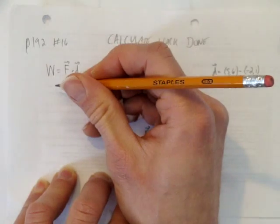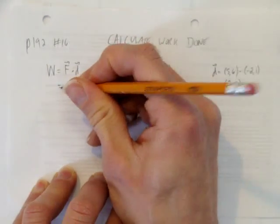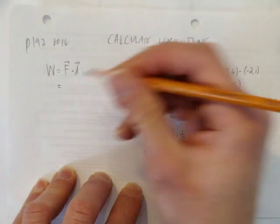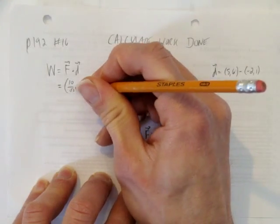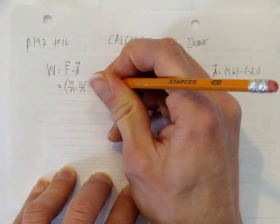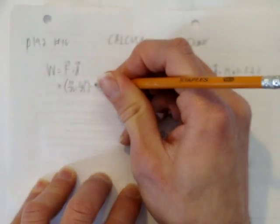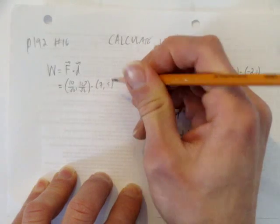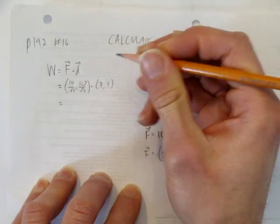So now we've got everything we need. We can just do the dot product of the force vector (10 over root 2, 10 over root 2) dot with the direction vector (7, 5).